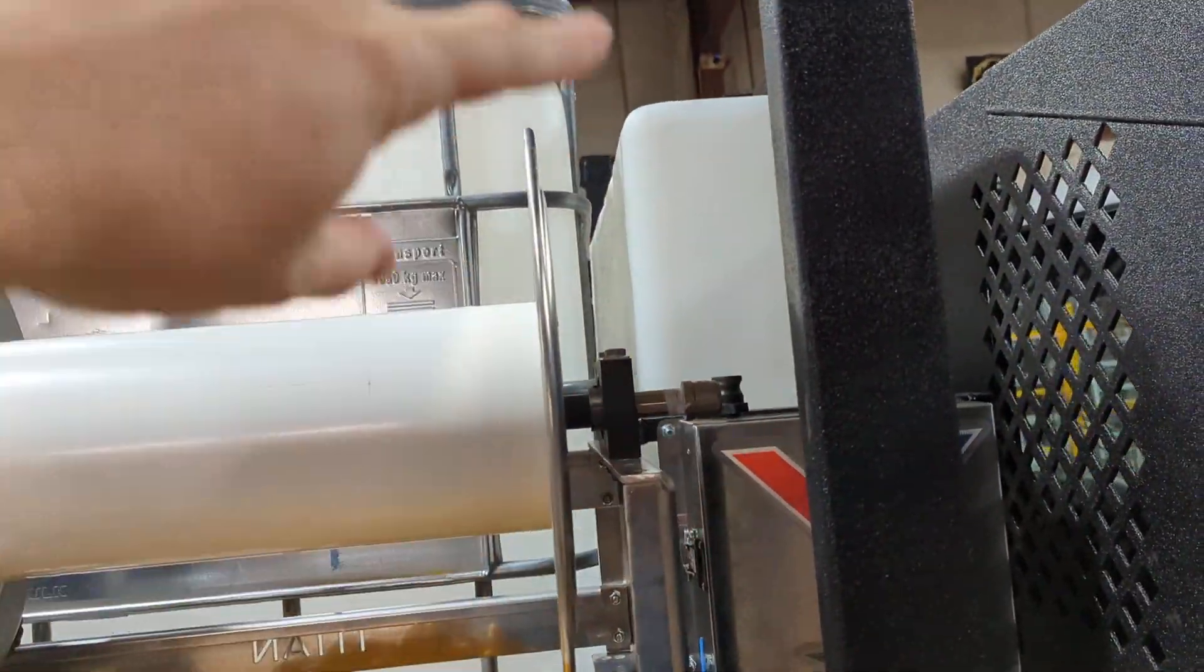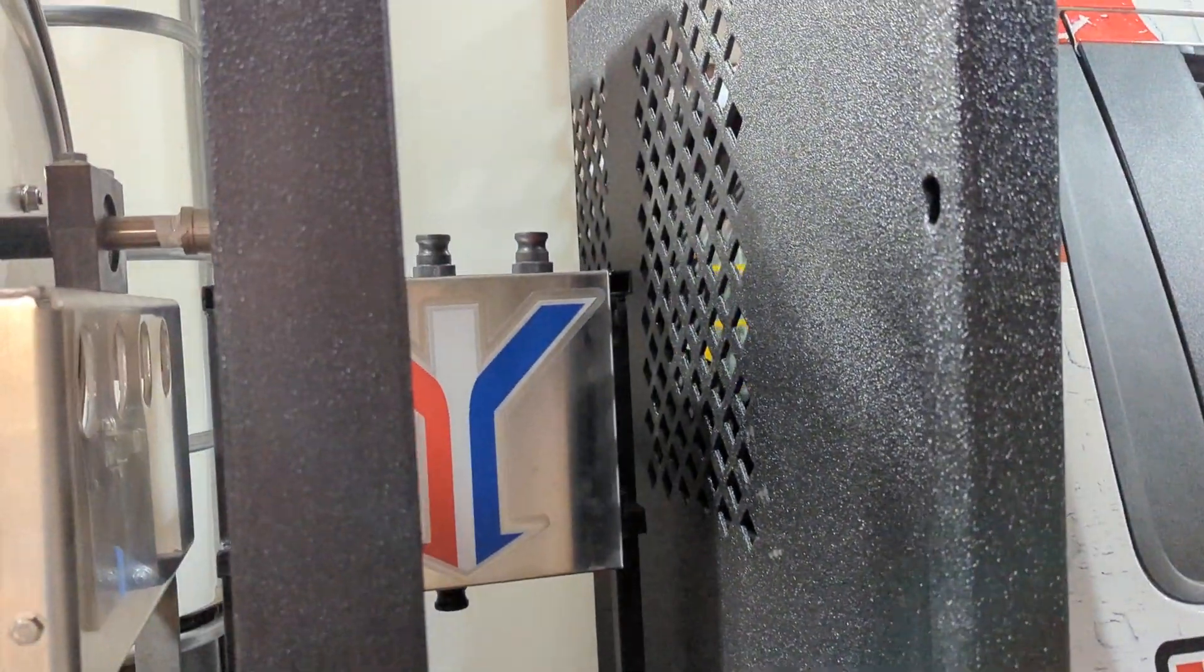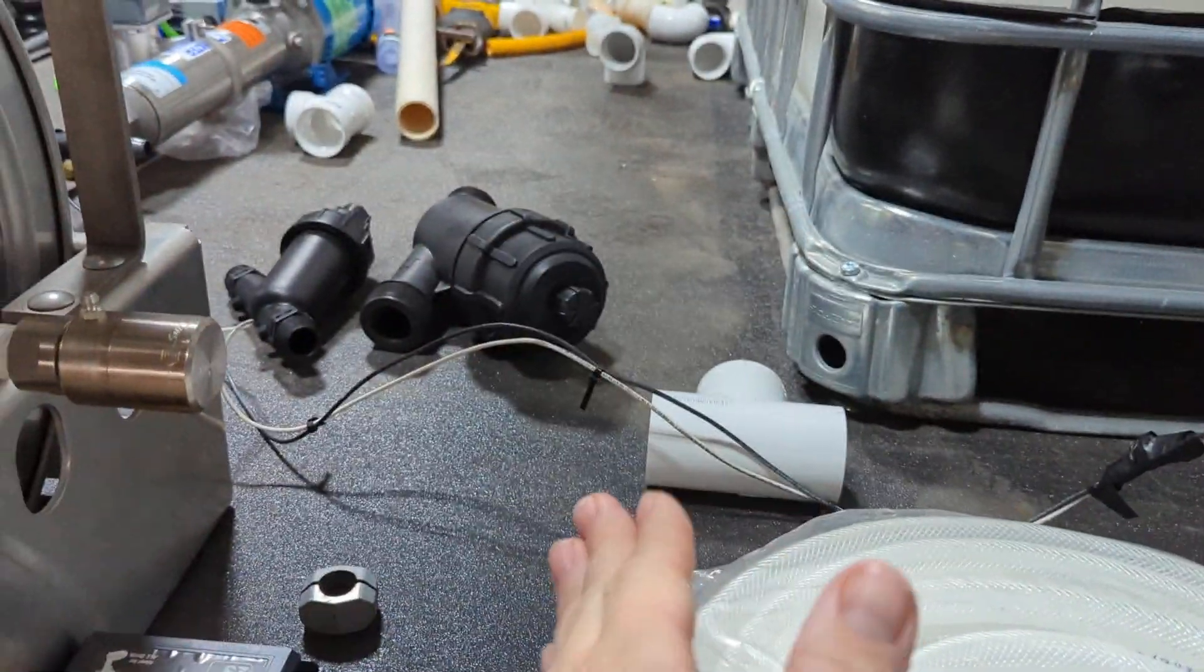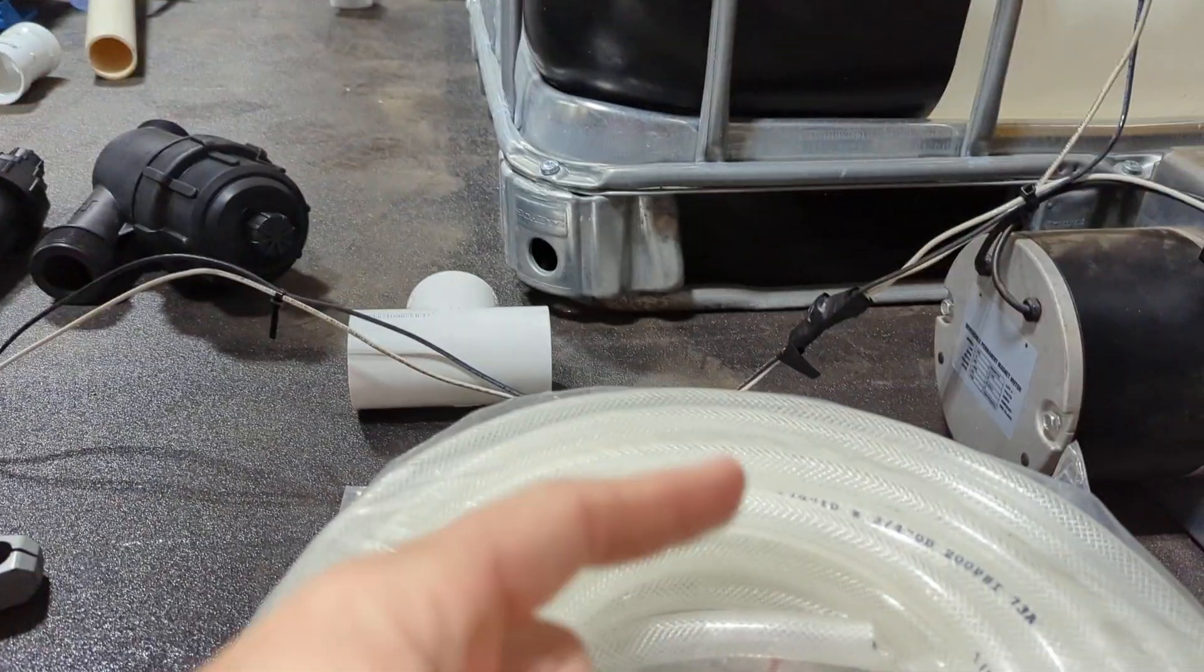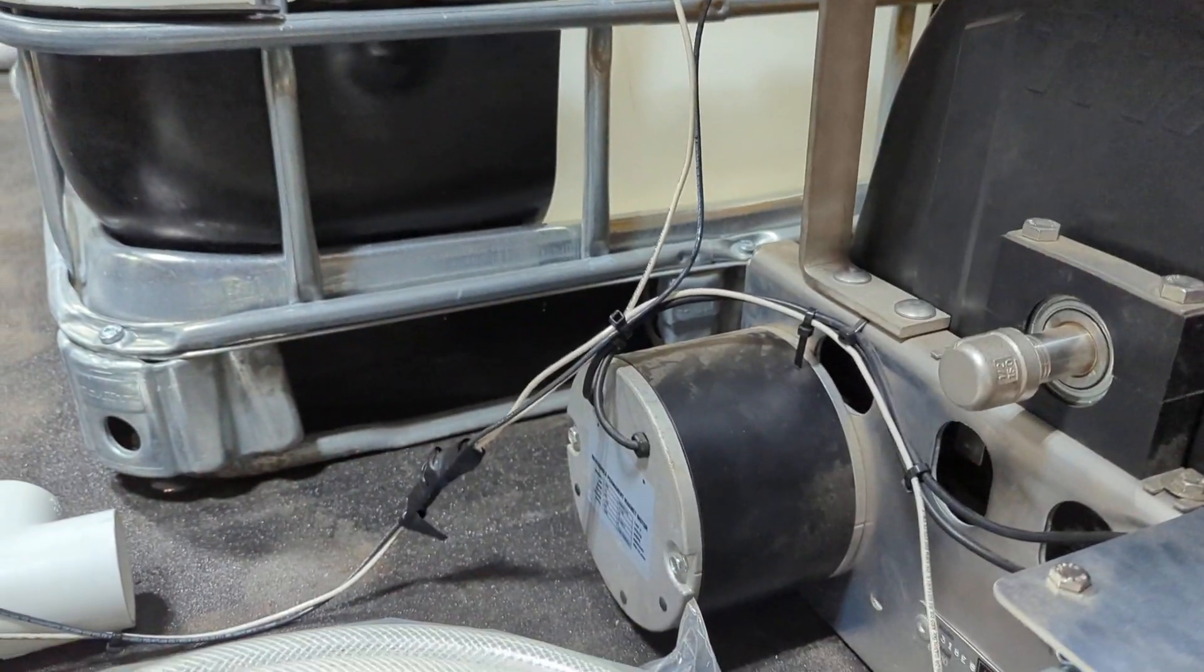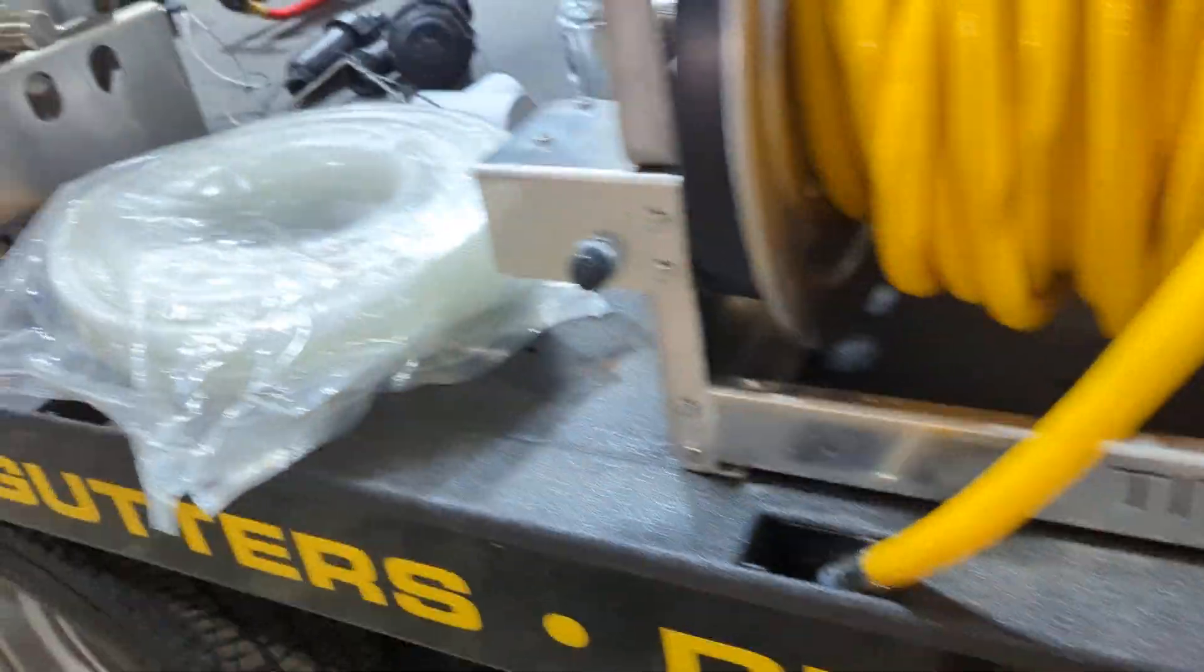The booster is gonna be right in here shooting out this way, so we'll be able to just have—it's already got the 90 coming off of that—so it'll have a quick 90 right there to that side of the hose. If we wanted to, we could run it back behind, but I think we're gonna try and just do it right there.